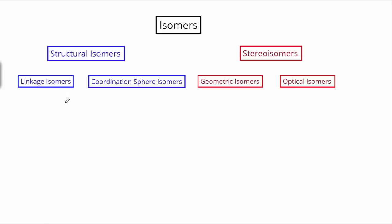There are a couple of major types of structural isomers. The first will be linkage isomers, and then coordination sphere isomers — we'll take a look at examples of those. There are also two types of stereoisomers: the first is geometric isomers, also called cis and trans isomers, and the second will be optical isomers, which are the most difficult ones to look at. We're going to take a look at all of these in quite a bit of detail, starting with structural isomers.